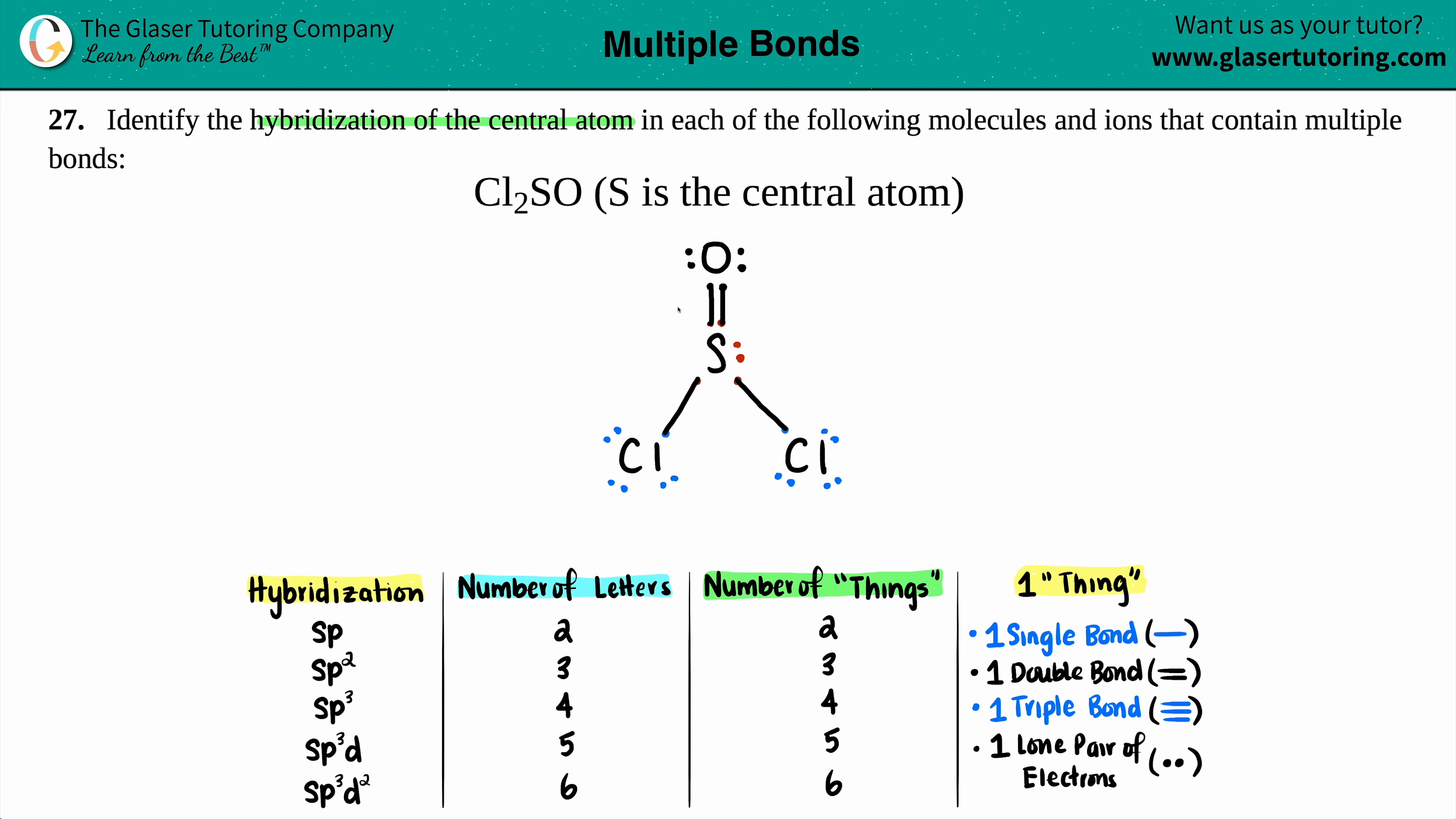We only need to know the hybridization of the sulfur, so we're only looking at what sulfur's got. Well, it's got a single bond—that's one thing. Another single bond—that's two things. A double bond—that's three things. And then it's got a lone pair—that's four things. So the sulfur has four things around it, and that corresponds to four letters: sp3. That is your final answer. The sulfur here would be sp3 hybridized.